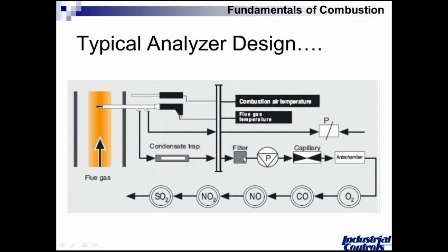As we learned in earlier slides, one of the byproducts of good combustion is moisture. So we take the moisture out of that sample. There might be some particulate involved, so we pass it through a filter. The P here in the diamond is our pump.